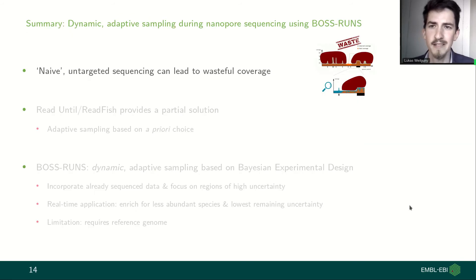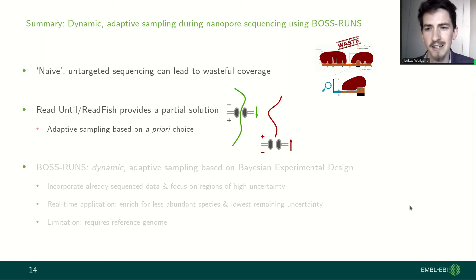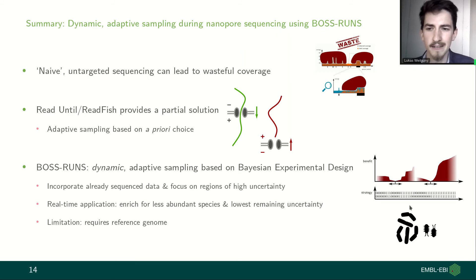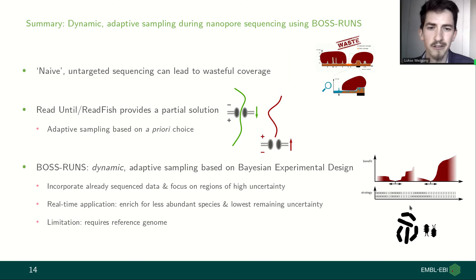To summarize this first part: I talked about how naive untargeted sequencing can lead to wasteful coverage, how ReadUntil and ReadFish provide a partial solution but still based on a priori choice of regions, and I introduced BOSS-RUNS, our method for dynamic adaptive sampling based on Bayesian experimental design, where we incorporate already sequenced data to focus the sequencing effort on regions of highest uncertainty — demonstrated with a real-time microbial community application.